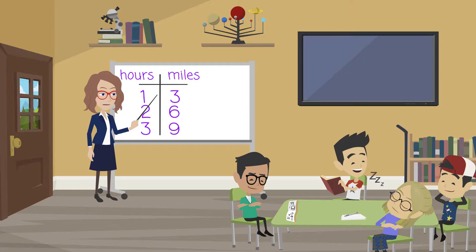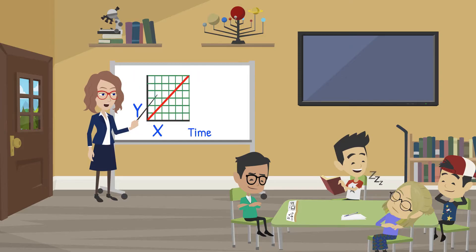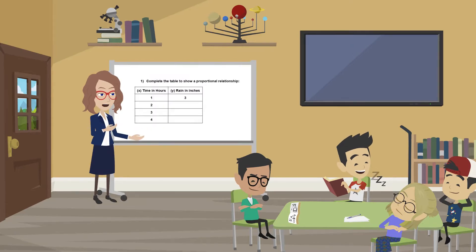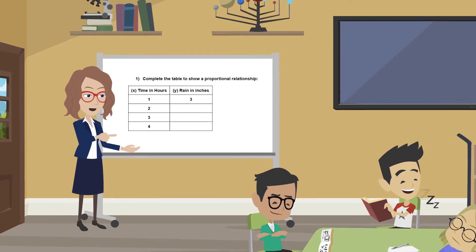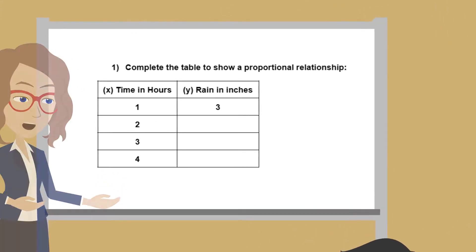All proportional relationships will increase or decrease at the same rate on a table. When finding the unit rate, also called the constant of proportionality, find the ratio of 1. And finally, a proportional graph will always be a straight line and it will go through the origin, or the point (0, 0). Now it is your turn to practice some proportional relationship problems. The answers will be shown at the end of the video.